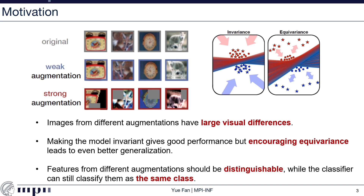In the above pipeline, we found that images from different augmentations have large visual differences. For example, taking images from CIFAR-10 and applying weak and strong augmentation, the strong augmentation is very different from weak augmentation, and we question whether the model should be invariant to such strong perturbations. We believe making the model equivariant rather than invariant to differently augmented images should lead to even better generalization performance. By equivariance, we mean that features from different augmentations should still be distinguishable in the feature space, while the classifier can still classify them as the same class.